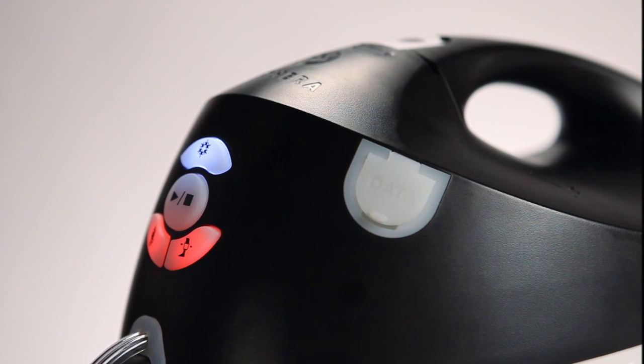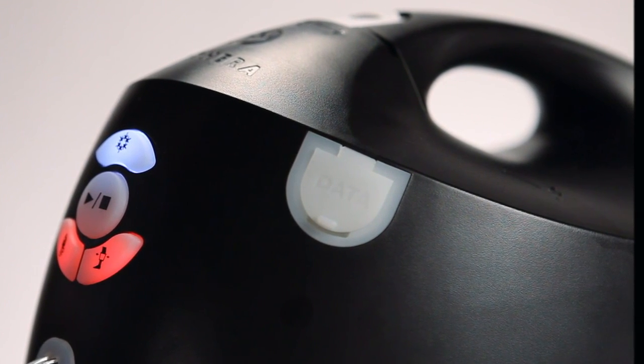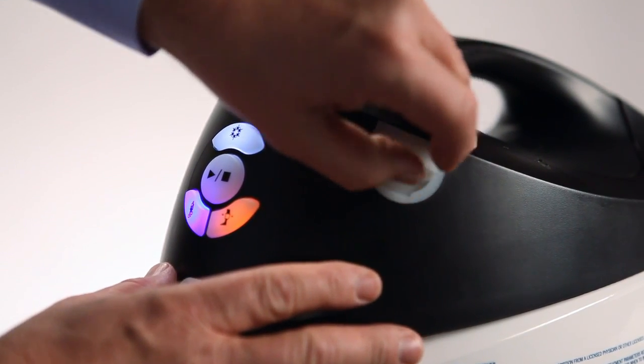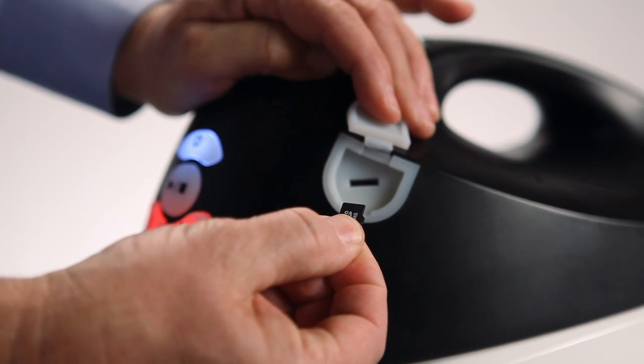When finished using the vPulse, it is important to send back the microSD card located in the data port in the front of the vPulse. To remove the card, open the door, press in on the card and it will pop out. Pull the card out and place it in the return mailer provided.